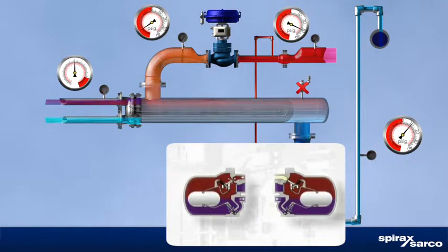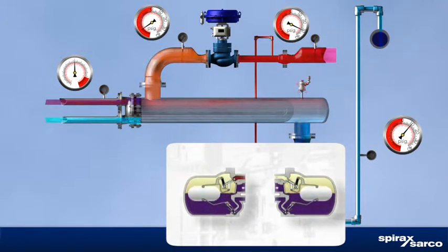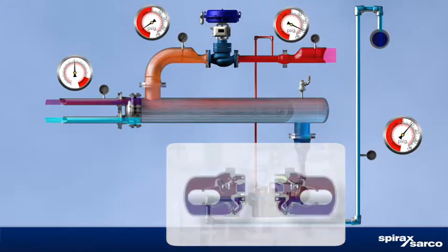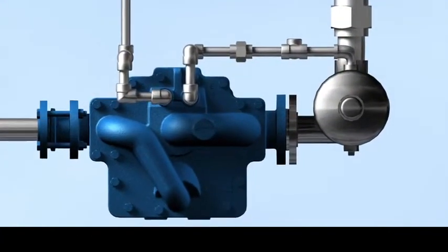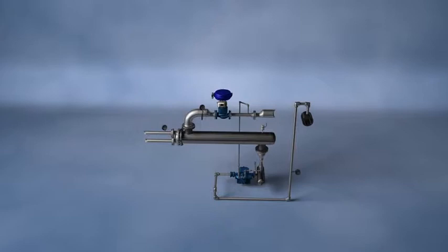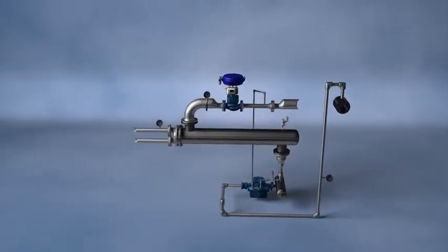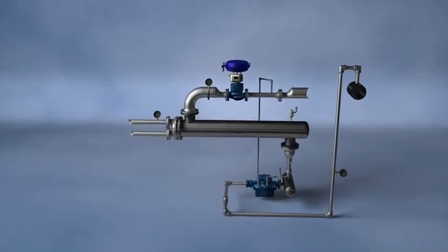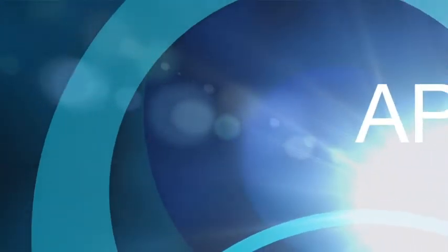A survey of your heat exchanger and condensate return system operating and maintenance data can uncover the below-par performance that indicates stall. If present, an automatic pump trap is an easy solution that quickly returns dividends in process quality, energy savings, and reduced maintenance costs.